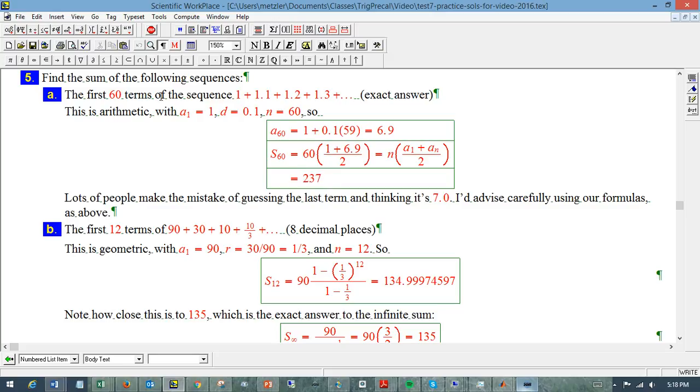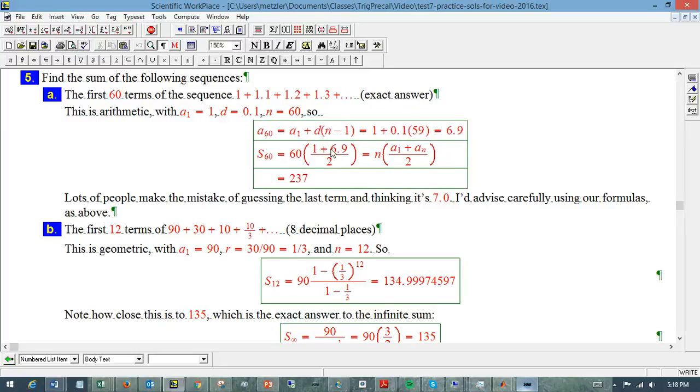So, this is a key thing, even though we want the sum, and our core formula is this guy, the formula we actually end up using is the master formula for the terms, because we need that term. Very common. Lots of people kind of guess that it's going to be 7.0, and that's just not true. You haven't done 60 steps starting from 1, you've done 59, so it's not quite 7.0.